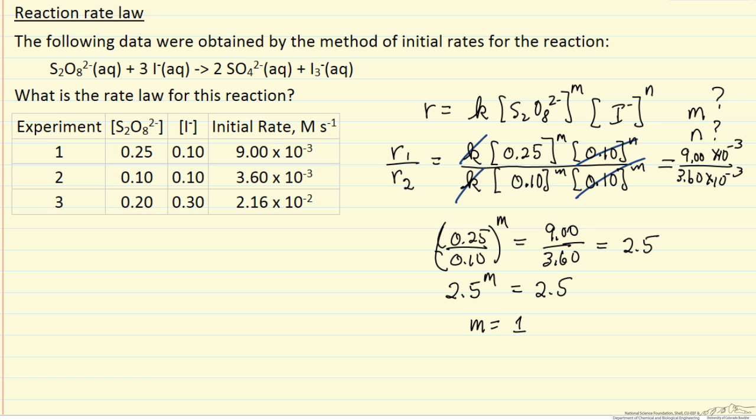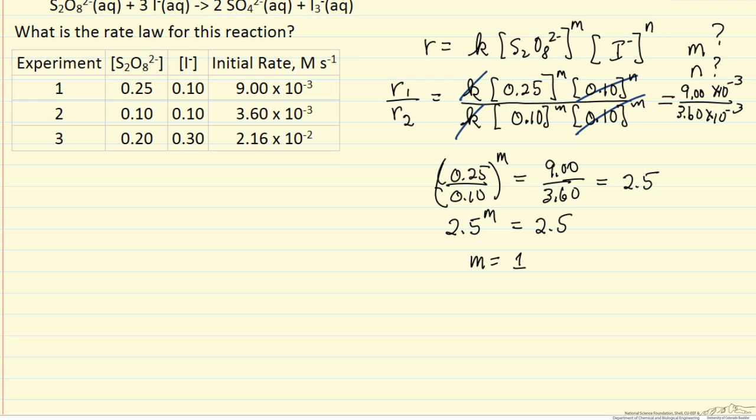Now we can use, for example, data from rates 2 and 3, and do the exact same comparison, the rate 2 over the rate 3. Well the k's cancel, so I can put the concentration of the S2O8 ion, 0.10, now we know it's raised to the first power m is 1, concentration of iodine raised to the power n, cancelled out the k's.